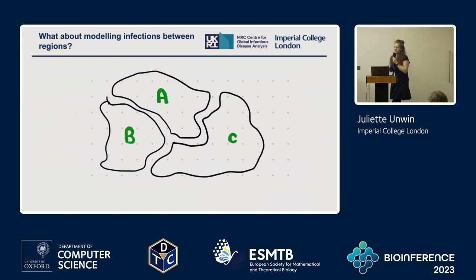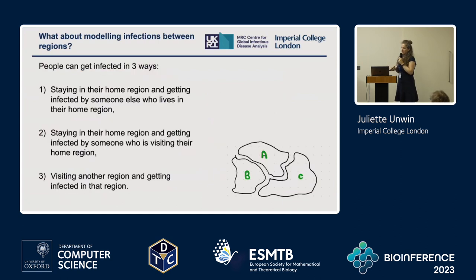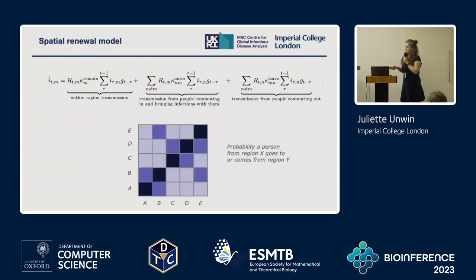This got me thinking about what happens if you want to incorporate modeling of infections between regions. We're starting to get access to this type of data now. Instead of modeling regions separately and producing an R_t for each region separately, we can create one model that enables the movement of people between regions. A person can get infected in three ways: by someone in their home region, by someone commuting into their home region, or by going out to work and getting infected in another region. So instead of one term in our infection equation, we now have three terms.